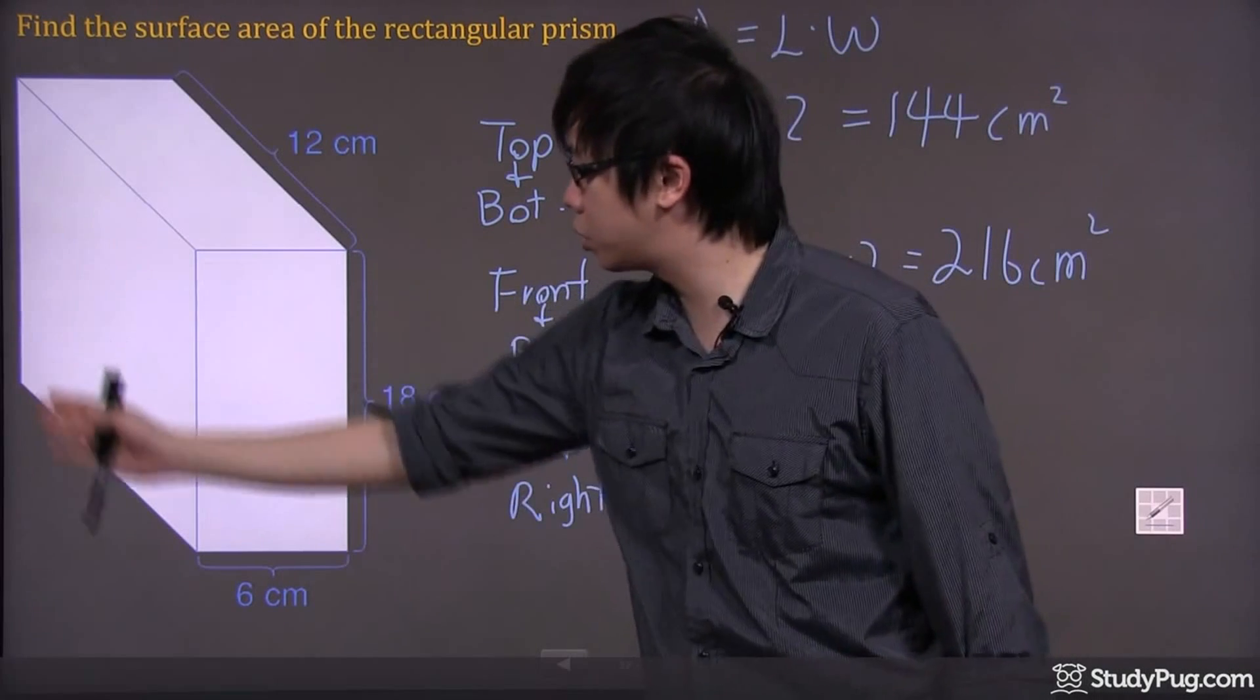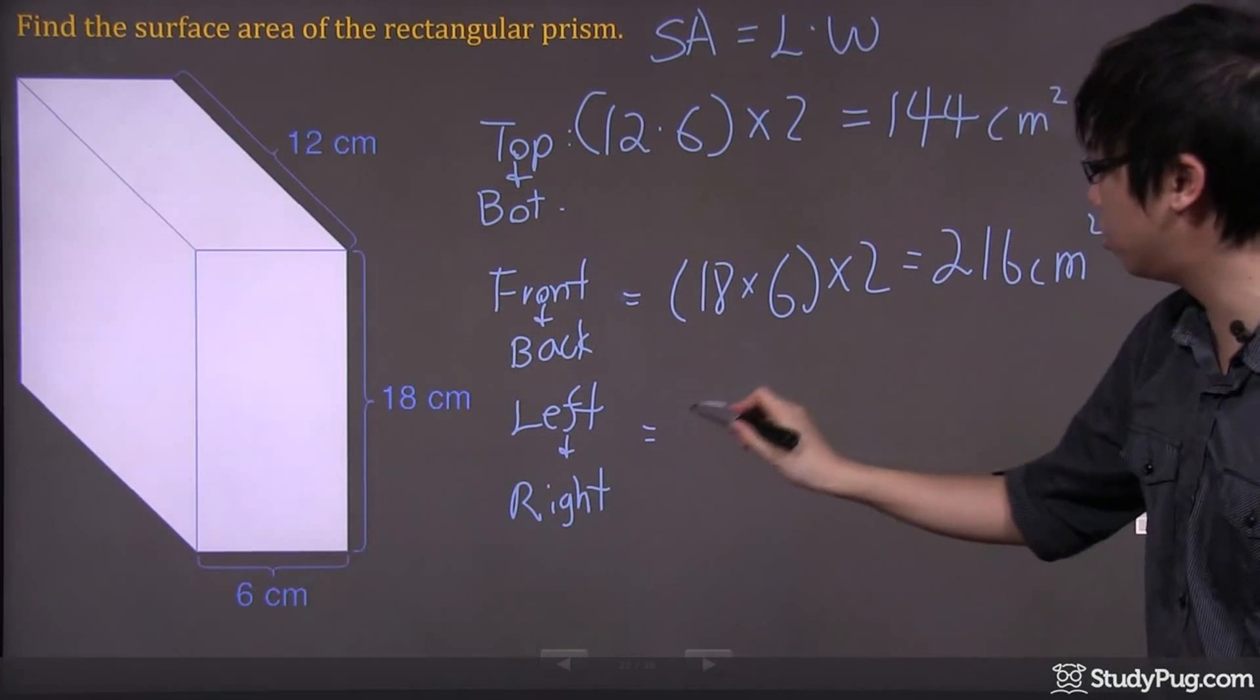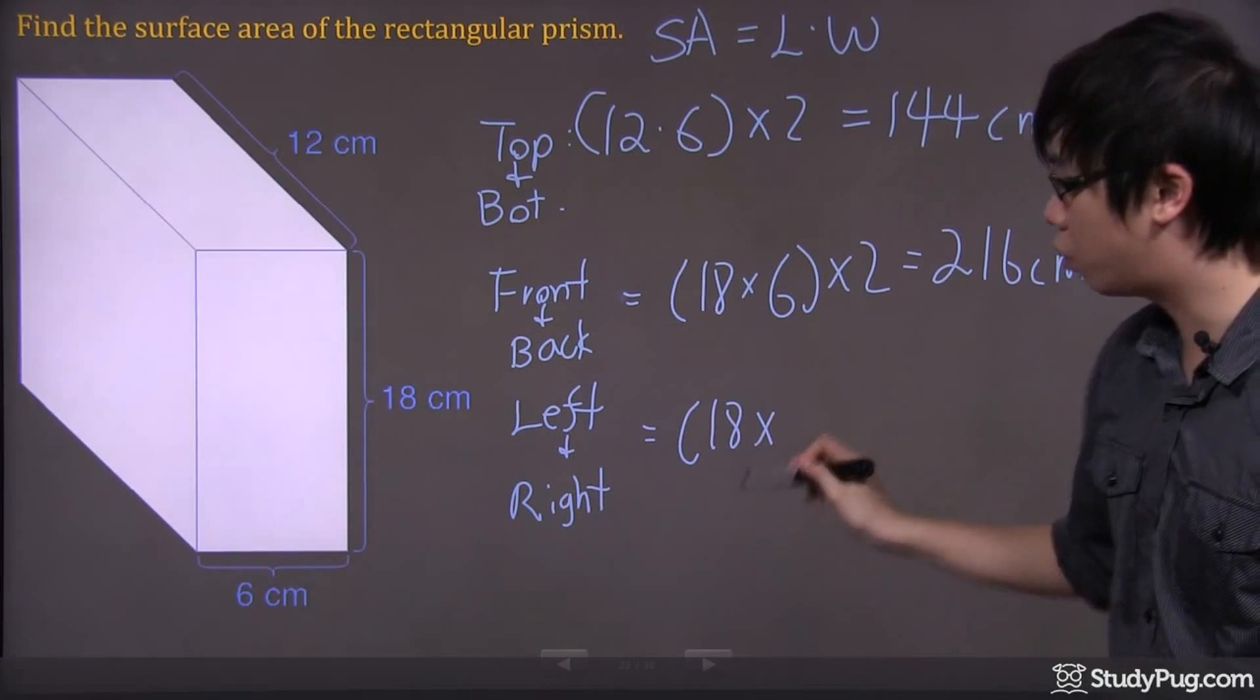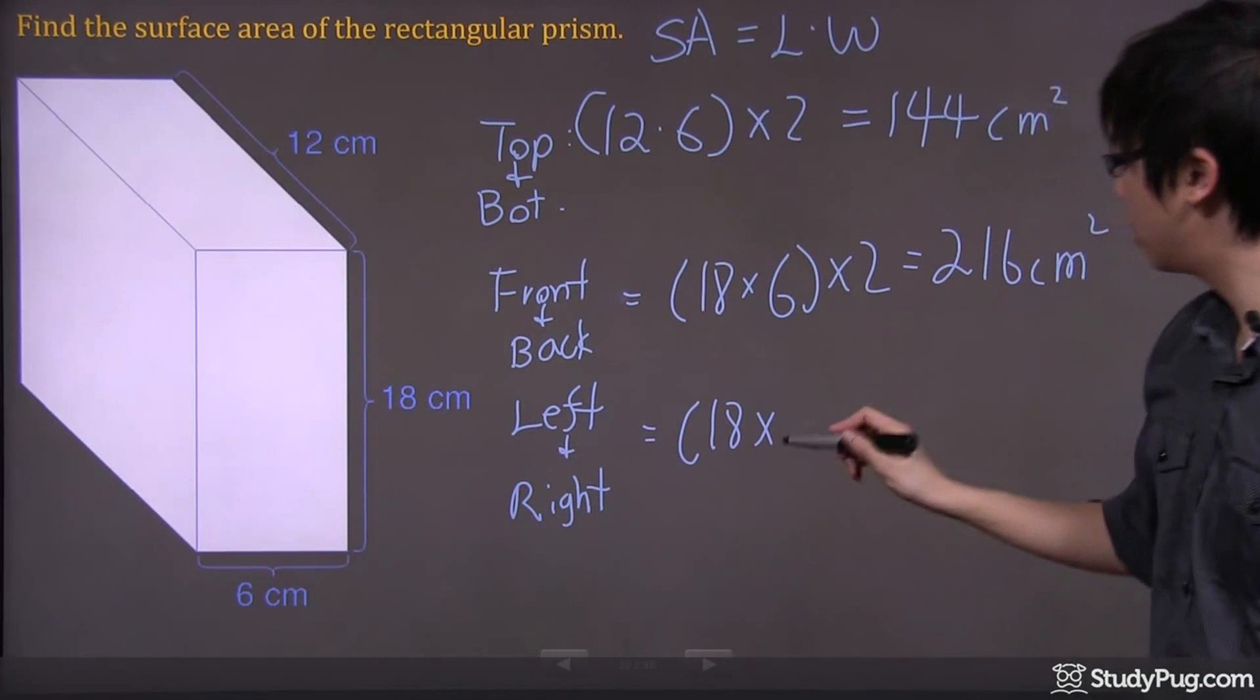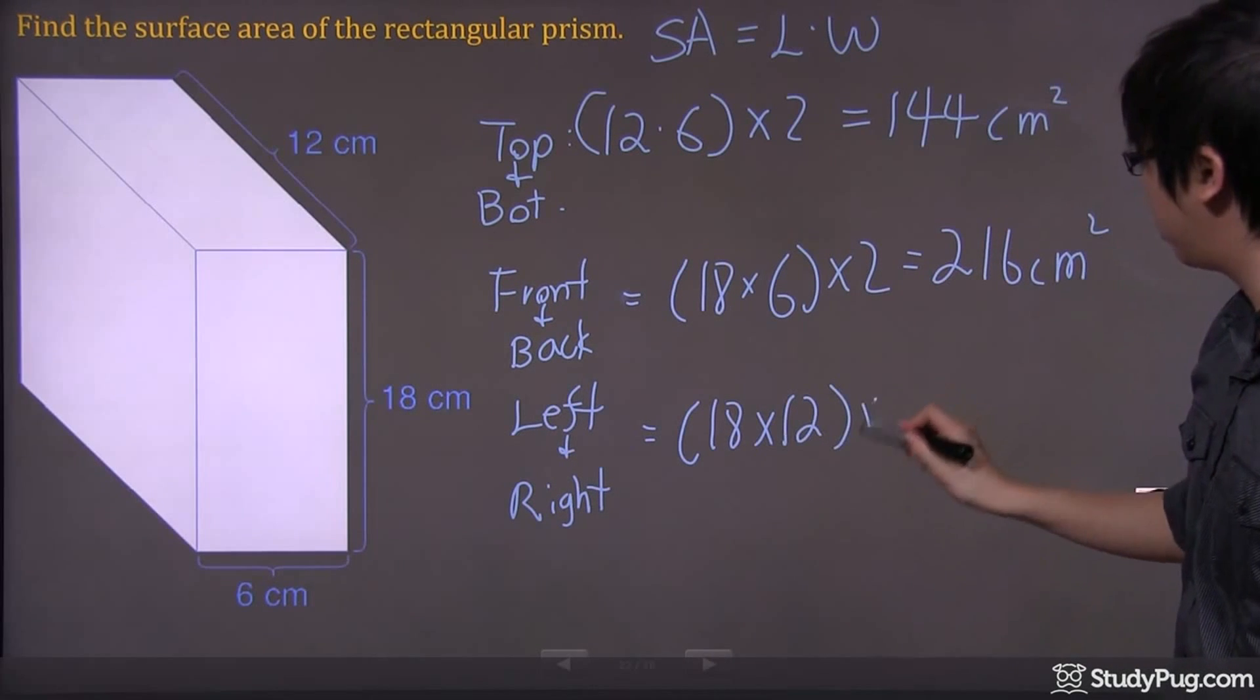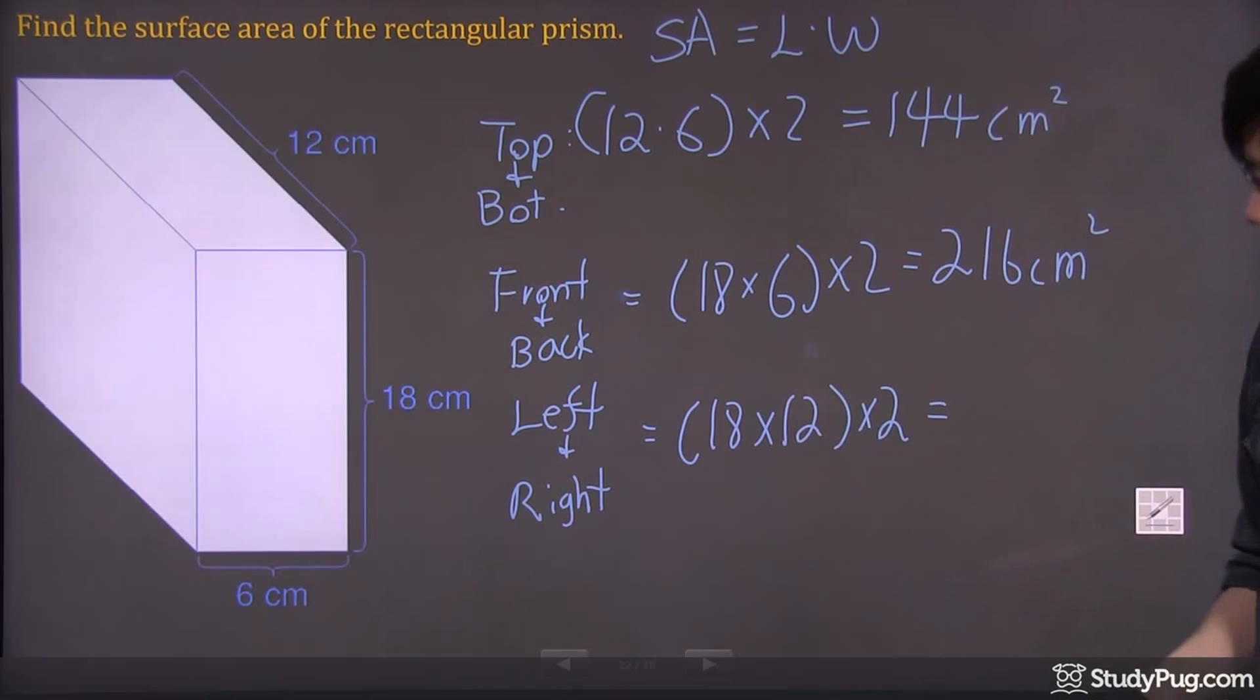So this bigger piece right here has a length of 18 and a width of 12. And of course, we know there are two pieces, so we're going to multiply by 2. So at the end, we've got 18 times 12 times 2, which gives us 432 centimeters squared.